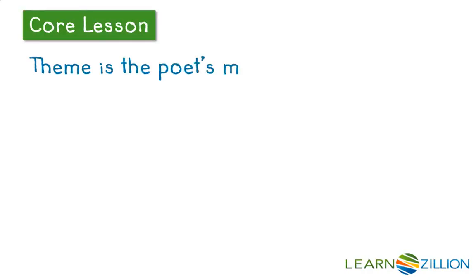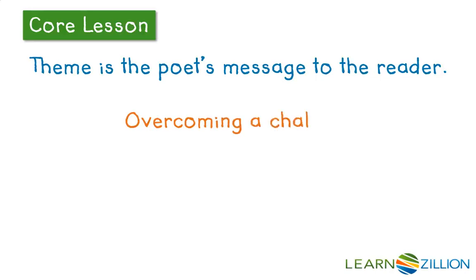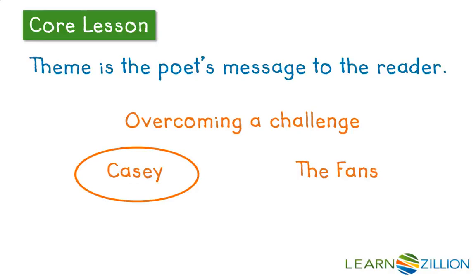Remember that the theme is the poet's message to the reader. We're going to figure out the theme of our poem, Casey at the Bat, by Ernest Lawrence Thayer, by looking at how characters overcome a challenge. The characters in our poem are Casey and the fans. Let's see if we can figure out a theme or a message by looking carefully at Casey and seeing how he overcomes a challenge.